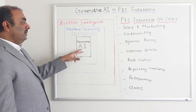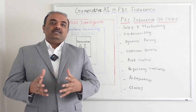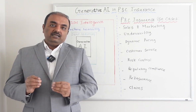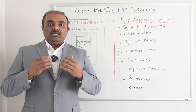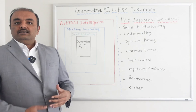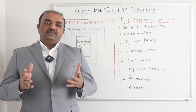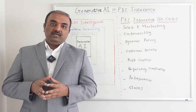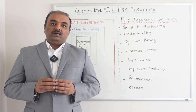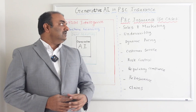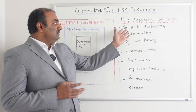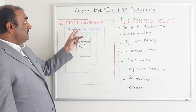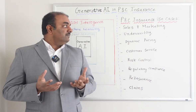Coming to P&C Insurance — how can Generative AI be applied here? P&C Insurance is a regulated industry, so it is very important that we take a cautious approach with each use case. Based on my experience, some high-level important areas include sales and marketing, where brokers or companies work directly with customers, and underwriting, which is the core heart of P&C Insurance where Generative AI can be applied for significant benefits.